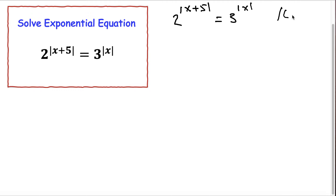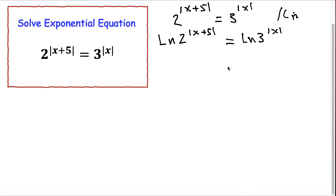Now I'm taking the natural log (LN) of both sides. LN-izing both sides gives us LN of 2 to the exponent (x plus 5) is equal to LN of 3 to the exponent absolute value of x. According to the rules of logarithms, this becomes: absolute value of (x plus 5) times LN 2 equals absolute value of x times LN 3.